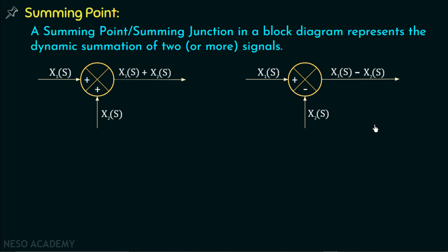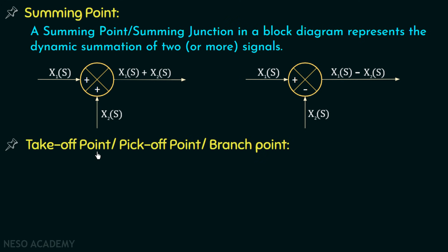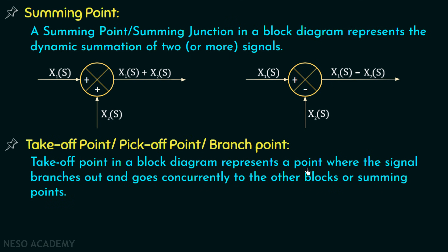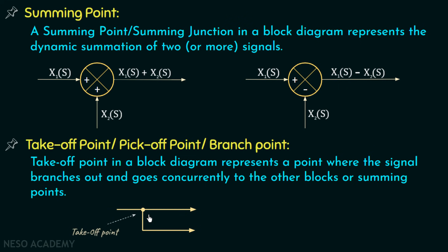Since we use the summing point or summing junction to add two or more signals in a block diagram, we can also call this point an adder point. Now, moving on to the takeoff point — also called a pickoff point or branch point — the takeoff point in a block diagram represents a point where the signal branches out and goes concurrently to other blocks or summing points. Looking at this diagram, from this particular point the signal distributes into another branch, so this point is called the takeoff point.